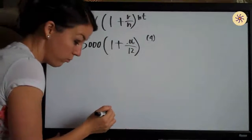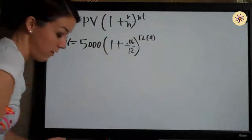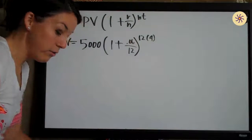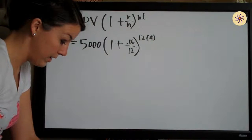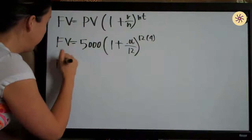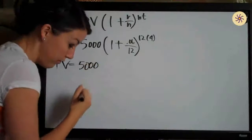So we have 12 in both places here, and once we've plugged in all of our values, all we need to do is simplify. So the way that we do that, I can simplify a little bit for you here, but you can just do it in your calculator. So 5,000,